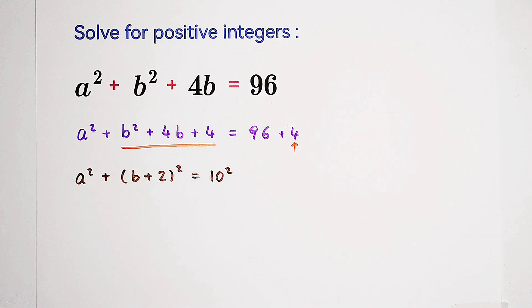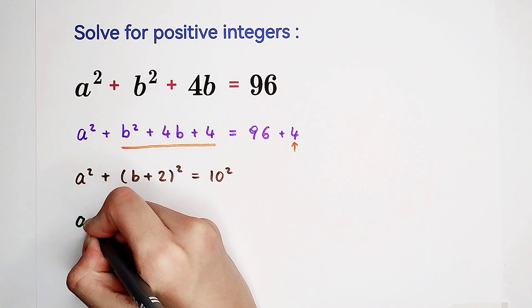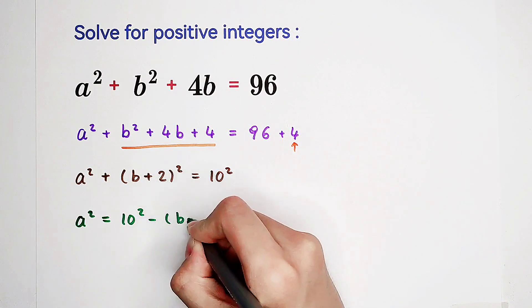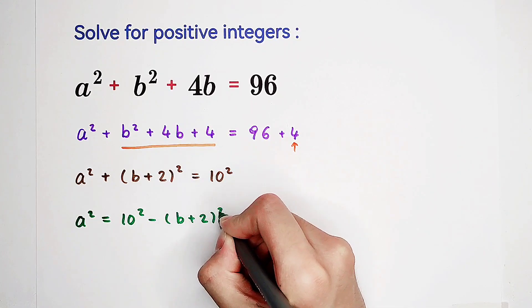a squared is 10 squared minus b plus 2 squared.